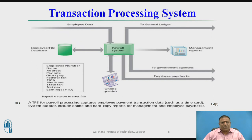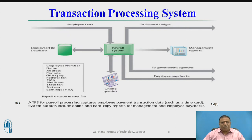A transaction processing system is a computer system that performs and records the daily routine transactions necessary to conduct business, such as sales order entry, hotel reservation, payroll, employee record keeping, and shipping. A payroll processing system keeps track of money paid to employees. An employee time sheet with the employee's name, social security number, and number of hours worked per week represents a single transaction for the system.